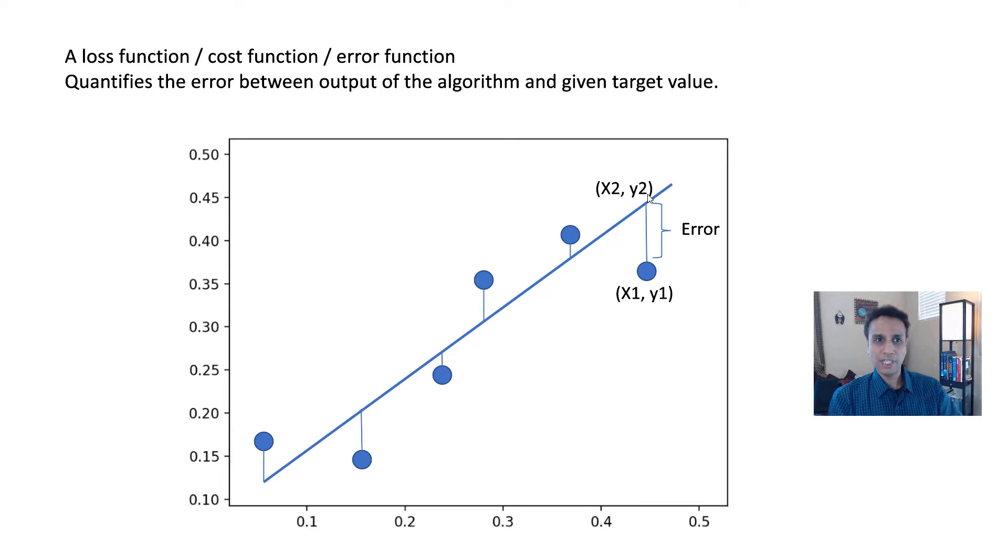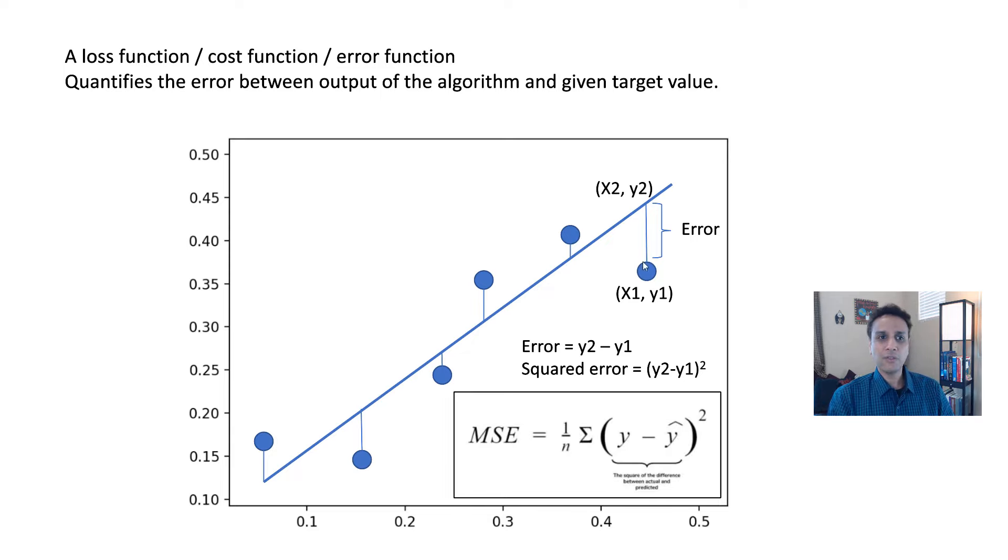Then what is the error? Y2 minus y1, right? This is the error right there. So the error is y2 minus y1, and the line can be on the other side. If the data point lies on the other side, then your y2 minus y1 can be a negative value. So when you're looking at error, you typically square it. So it doesn't matter if it is on the positive side or on the negative side when you square it.